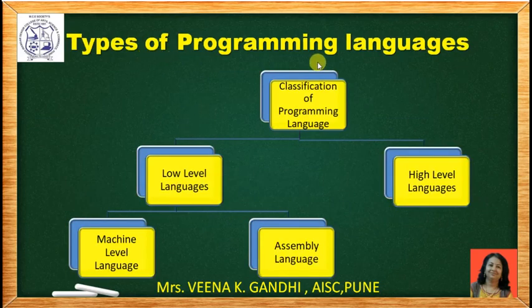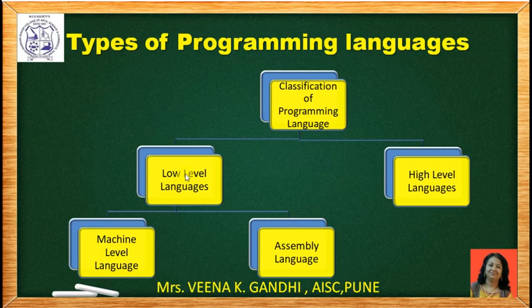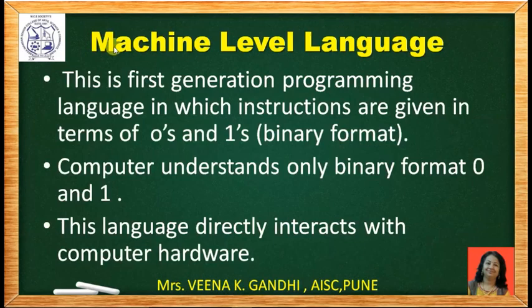Now, types of programming languages. They can be divided into mainly two parts: low level languages and high level languages. Again, low level languages can be divided into two parts: machine level language and assembly level language. Now first we will see machine level language.